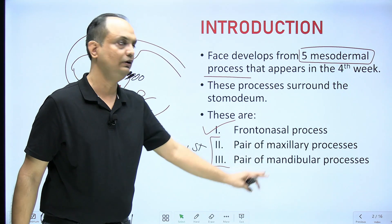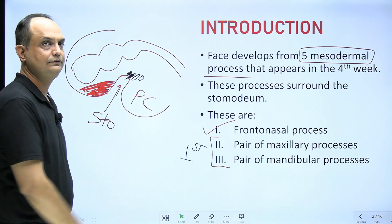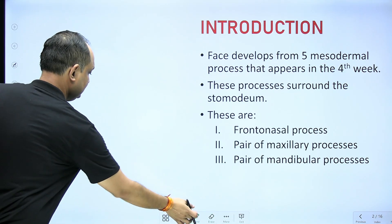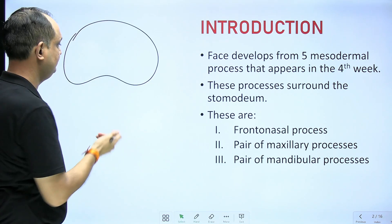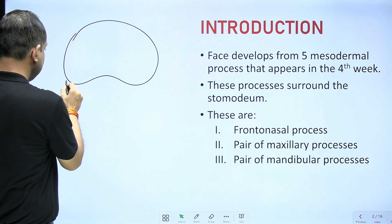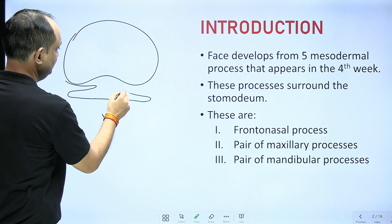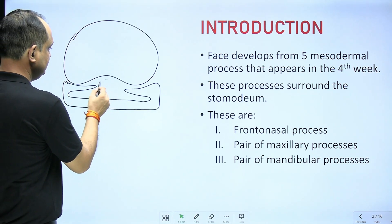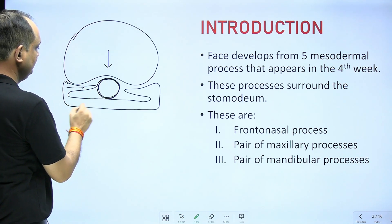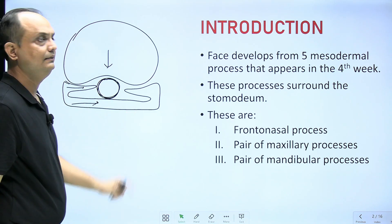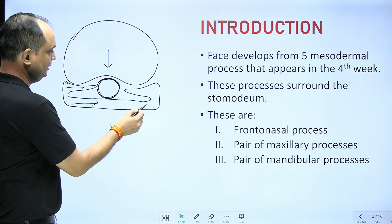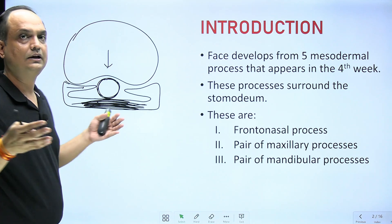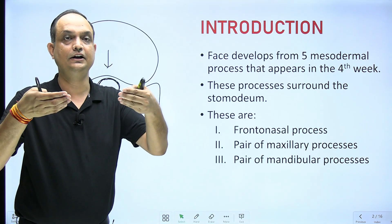The upper one is known as the maxillary process and the lower one is known as the mandibular process. When you see from the ventral surface, you find that the frontonasal process covers the superior part of the developing stomodium. The maxillary process and mandibular process are the parts of the first pharyngeal arch. In this way, the developing oral cavity is surrounded by five processes: frontonasal, maxillary, and mandibular. The right and left mandibular processes actually meet each other — we know the arches are paired and later fuse in the midline.